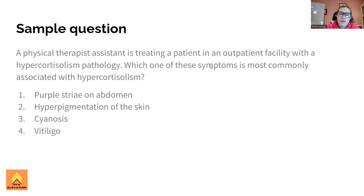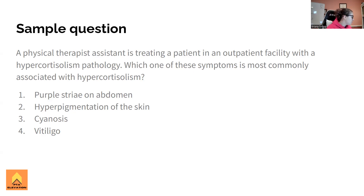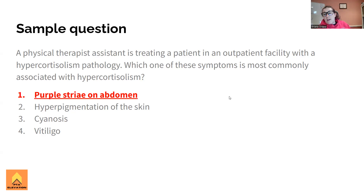Let's get into our sample question. A physical therapist assistant is treating a patient in an outpatient facility with a hypercortisolism pathology. Which of the following symptoms is most commonly associated with hypercortisolism? One: purple striae on abdomen. Two: hyperpigmentation of the skin. Three: cyanosis. Or four: vitiligo. The answer is number one - purple striae on abdomen. Why? Because the question is asking about hypercortisolism. I know I just spent this whole presentation talking about hypocortisolism, but the boards are going to throw them in together and try to confuse you.